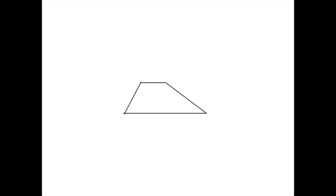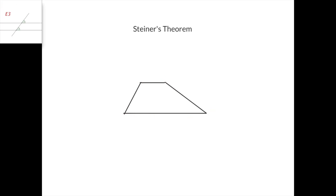Today we're going to talk about Steiner's theorem. It is a theorem about trapezoids. A trapezoid is a quadrilateral like this one, such that two of its opposite sides are parallel. So this side is parallel to this side.